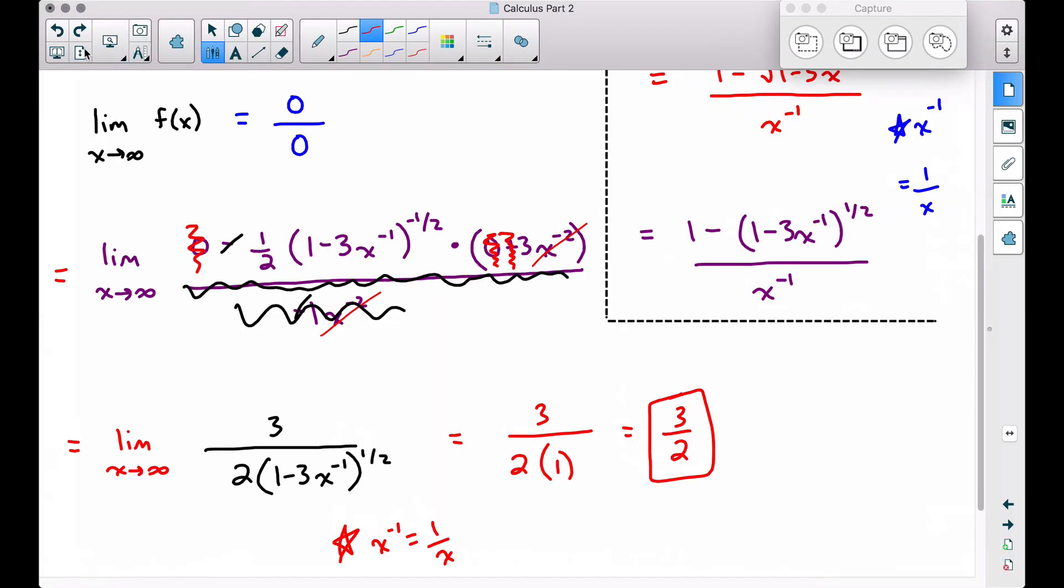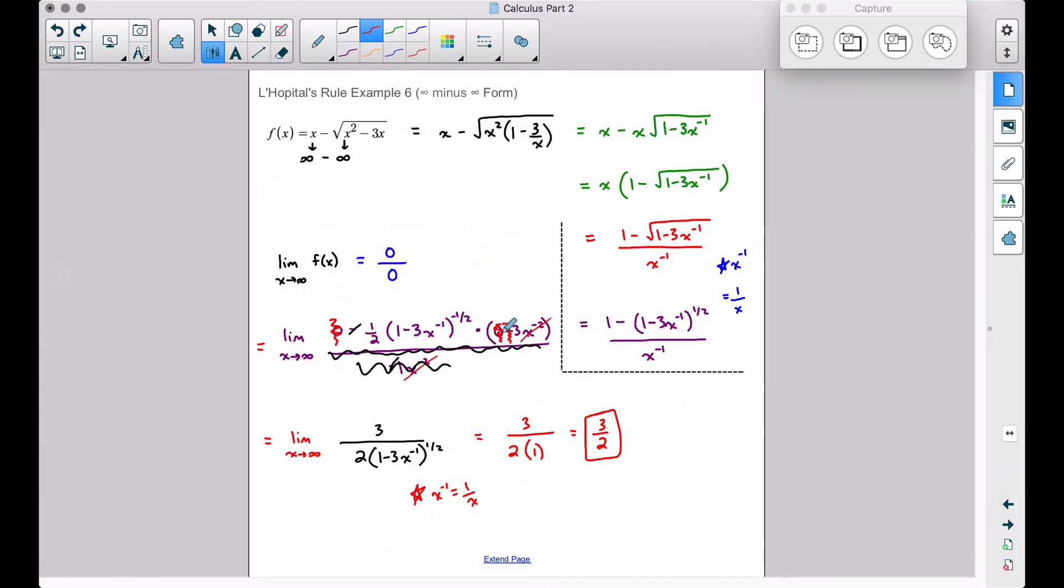This corresponds perfectly with this example that we worked out. But yes, it did involve a lot of trickery at the beginning when we got infinity minus infinity. We had to write it in some type of form where we hopefully got 0 over 0 or infinity over infinity. And in this problem, we did. We got 0 over 0. We did L'Hopital's rule. We did some funky simplifying with all this scribbled stuff in here. But ultimately, it did lead to the correct limit, as we saw over in Desmos, of 3 halves.